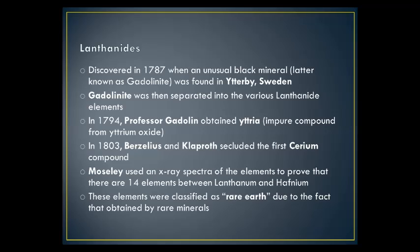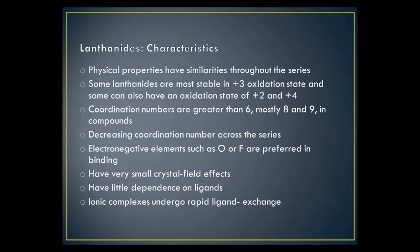Later, Moseley used X-ray spectra of the elements to prove that there were 14 elements between lanthanum and hafnium. The rest of the elements were later separated from the same mineral. These elements were first classified as rare earth, due to the fact that they were obtained from reasonably rare minerals. Like any other series in the periodic table, such as the alkali metals or the halogens, the lanthanides share many similar characteristics.